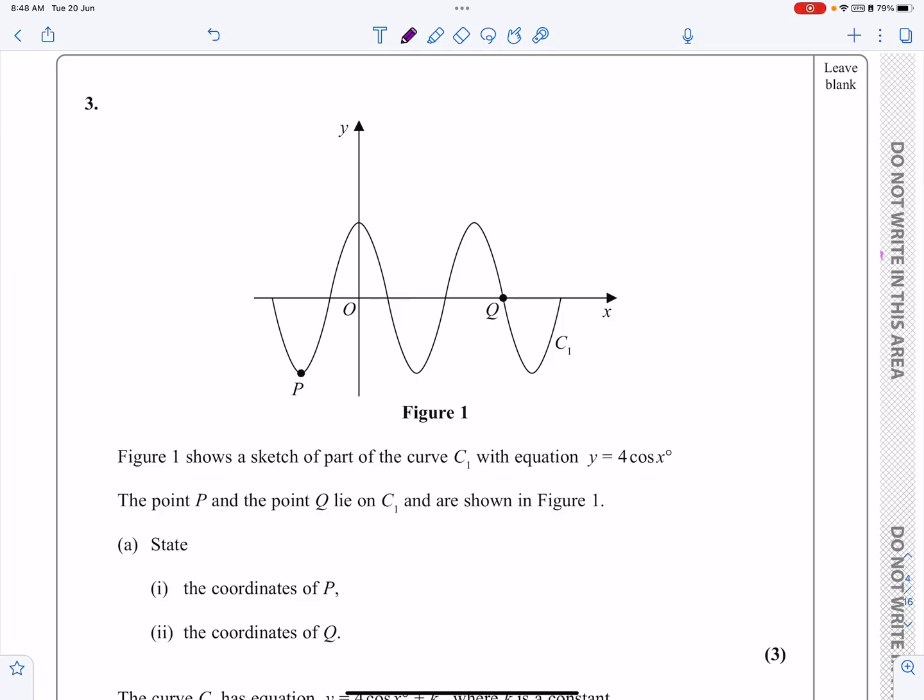Okay, this is the P1 paper from January 2021, question number three. As you can see by looking at it, this is a trig ratios question looking at the graphs of sine, cos, tan. In particular, with this one, we're going to be looking at the graph of cos x.